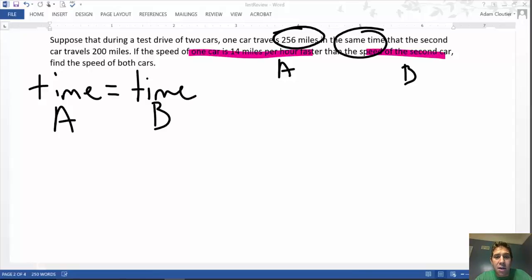Definitely, A, which travels faster, went 256 miles. So I will mark A here and B there.